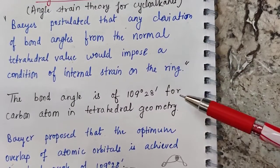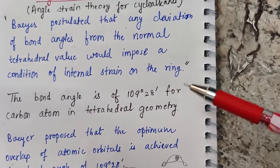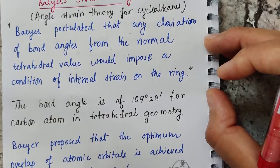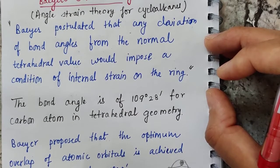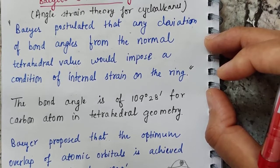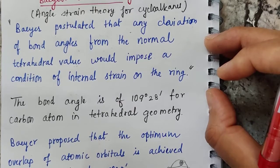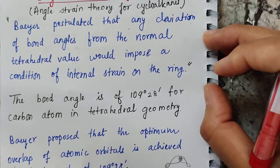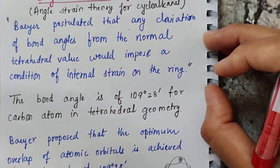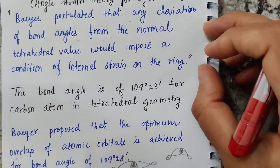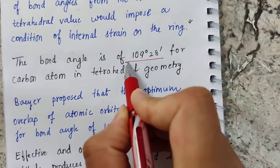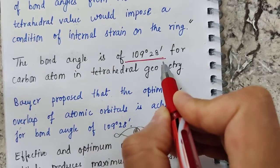If you have a ring structure and there is a deviation from the normal tetrahedral value of the bond angles, we know that the tetrahedral bond angle is 109° 28'. Baeyer proposed that any deviation from this value would result in strain on the ring.